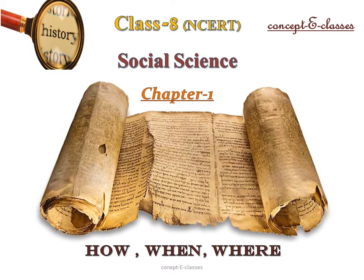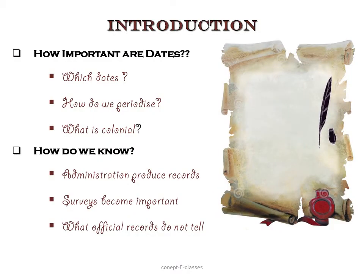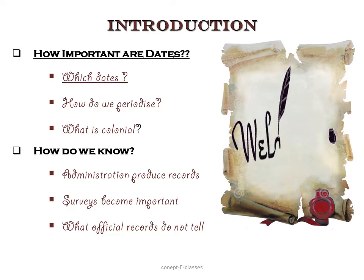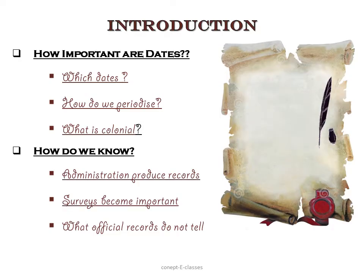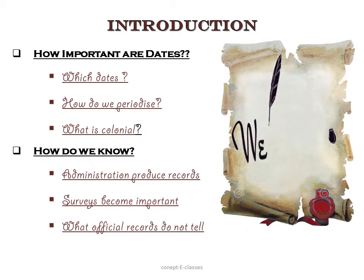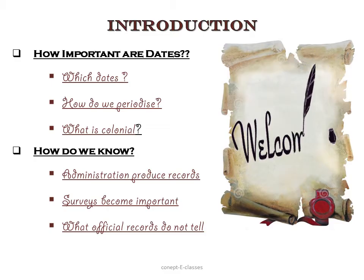This is Concept E Classes and today we'll study Chapter 1 of History in Class 8 Social Science: How, When and Where. In this chapter, first we'll see how important dates are — with three subtopics: which dates are important, how do we periodize our history, and what is colonial. Then we'll see how we know about our past, through records produced by the British administration, through surveys, and what these official records do not tell. This is just an introductory chapter for the whole book, Our Past Three.